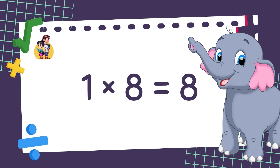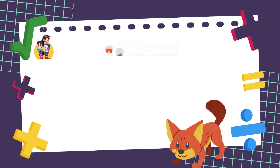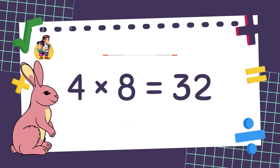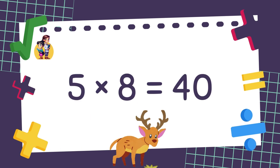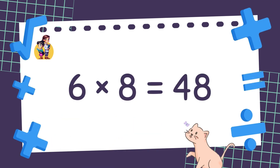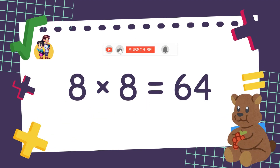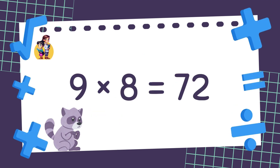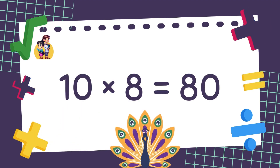1 x 8 is equal to 8. 2 x 8 is equal to 16. 3 x 8 is equal to 24. 4 x 8 is equal to 32. 5 x 8 is equal to 40. 6 x 8 is equal to 48. 7 x 8 is equal to 56. 8 x 8 is equal to 64. 9 x 8 is equal to 72. 10 x 8 is equal to 80. Well done!